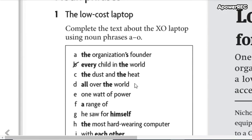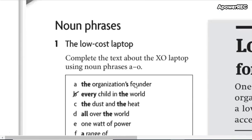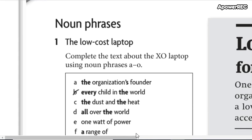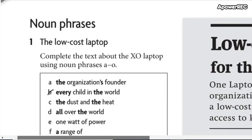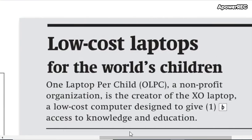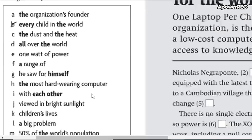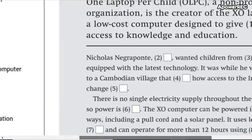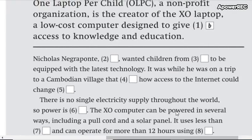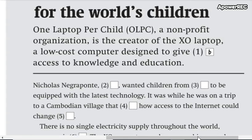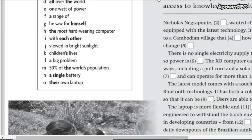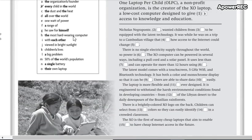Noun phrases — you already know what noun phrases are. So you are going to complete the text about the XO laptop using the noun phrases. This is low-cost laptops for the world's children. You are going to use these phrases — just write the letters to complete this text. For example, number one is letter V, it's already used: every child in the world. You're going to complete the text using these expressions.